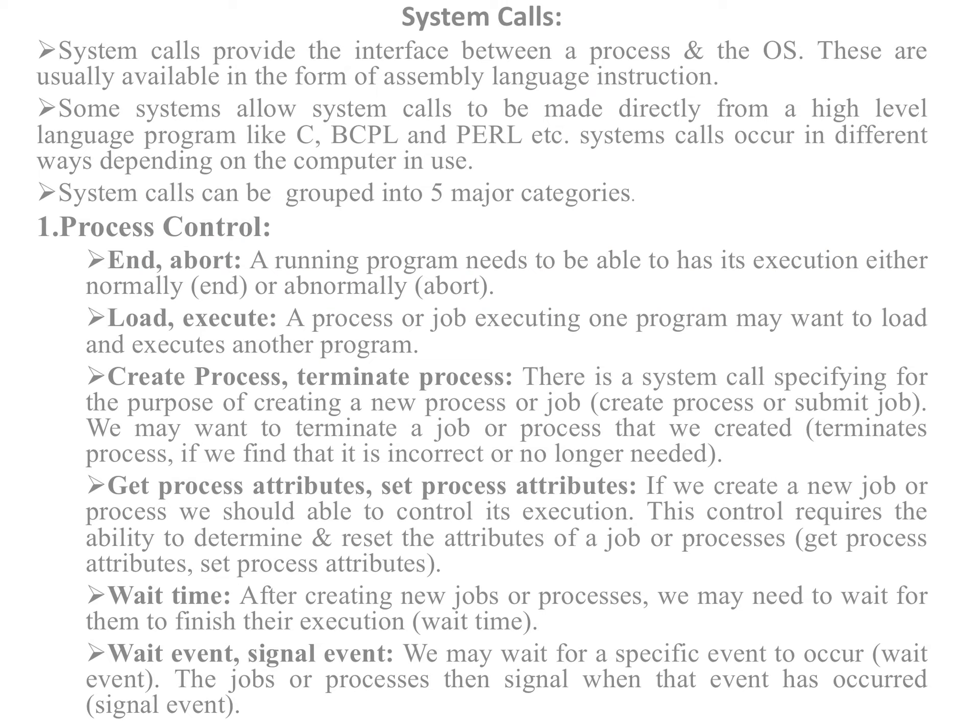System calls are grouped into five categories. When we do any task, a system call is generated related to that task. For example, if I want to create a process, the create process system call will be generated. The first category of system calls is process control. Process control relates to the process — a program in execution — and a program is a set of instructions.